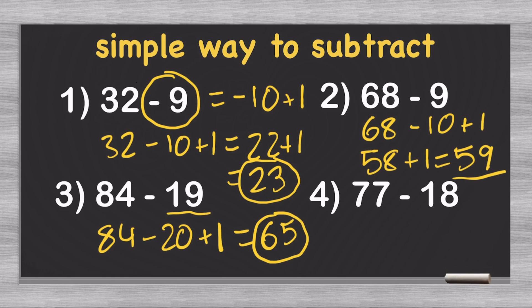And we can do this for our fourth example too. And say, well, 77 minus 18, 18 is pretty close to 20. So if we treated this as 77 minus 20 plus 2, that gives us 57 plus 2, which is equal to 59.